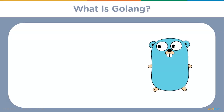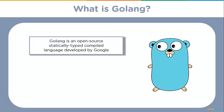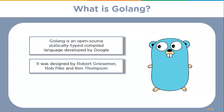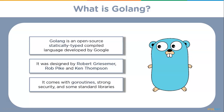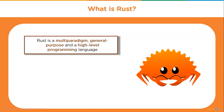Golang is an open-source, statically typed, compiled language developed by Google. It has a strong focus on building web APIs and small services that can scale endlessly. It was designed by Robert Griesemer, Rob Pike, and Ken Thompson to reduce the complexity of managing infrastructure and codebases within Google. It comes with Go routines, strong security, and standard libraries.